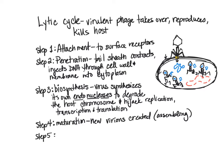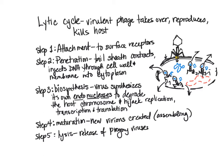Step five is lysis — the release of progeny viruses or virions. The cell bursts open and all of the brand new bacteriophages are released to the exterior, where they can infect new bacteria. Those are the five steps of the lytic cycle. In the lytic cycle, we're talking about virulent phages that infect and kill the host.